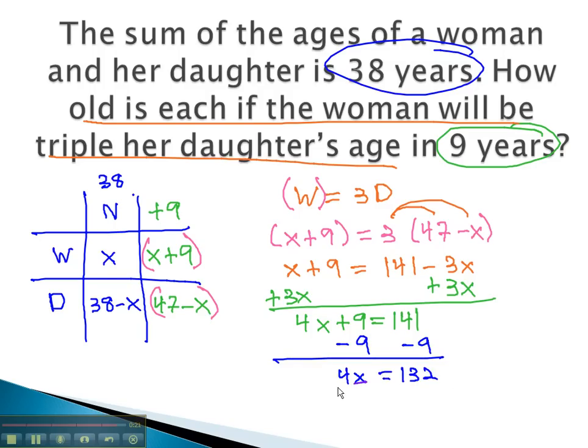And finally, dividing both sides by 4, x is equal to 33.